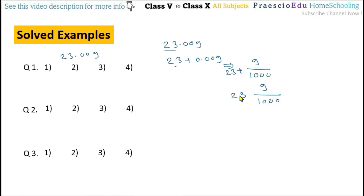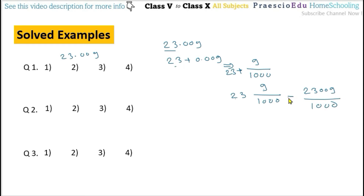This is a mixed fraction. To convert to an improper fraction as per the options: 1000 multiplied by 23 equals 23,000, then plus the numerator 9, giving us 23,009 divided by 1000. That is, denominator multiplied by the whole number quotient plus the remainder. So this is given in option number 2.